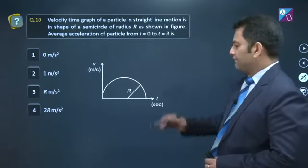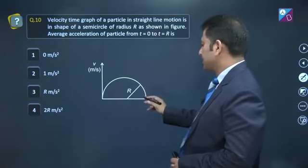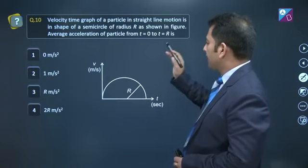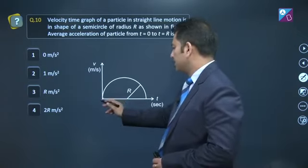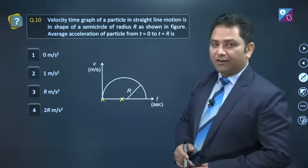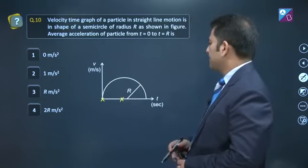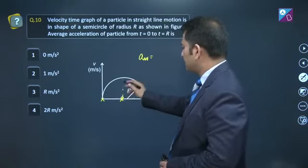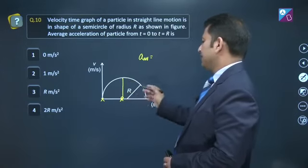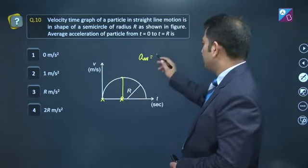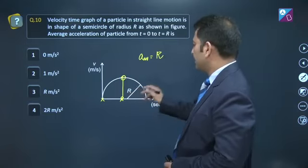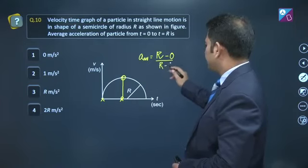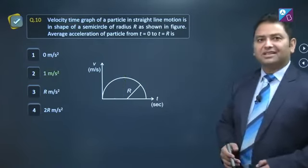Question number 10: A velocity-time graph is given in the form of semicircle and this semicircle has radius R. We need to calculate average acceleration from 0 to R. That is, from this time to this time, we need average acceleration. By the way, what is the formula for average acceleration? Final velocity - that is, the velocity corresponding to this time - this time corresponds to velocity, and this value will also equal R. So final velocity is R, initial velocity is 0, final time is R minus 0. See, this is simple: 1 meter per second squared.